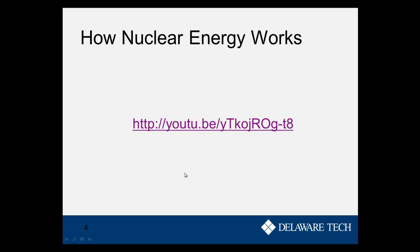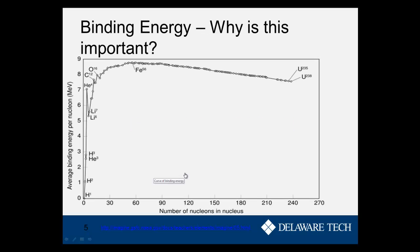Let's look at some facts about nuclear energy. I wanted to show you this binding energy curve again, to figure out why this is important. What happens is that if we start from a lower point and go to a higher point of the binding energy curve, we release energy. So that's why when we went from uranium-235 up to here with the krypton and the other atom, we release energy.